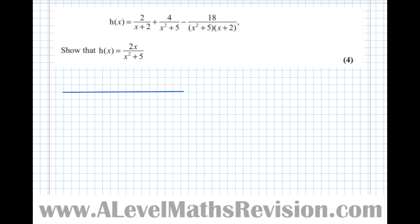I've already identified my common denominator: (x plus 2)(x squared plus 5). For the first fraction, I times by (x squared plus 5) over (x squared plus 5), giving 2(x squared plus 5) in the numerator. For the next one, I times by (x plus 2), so the numerator becomes 4(x plus 2). The third fraction already has the common denominator, so I don't need to do anything to it.